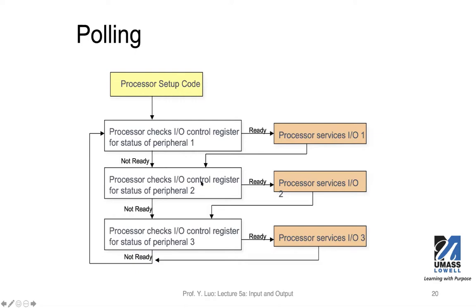If the resource is ready — whether for data or for transmitting through the transfer registers — the processor will be serving that IO device if it finds out the device is ready. As you can see, the processor has to do all this checking.